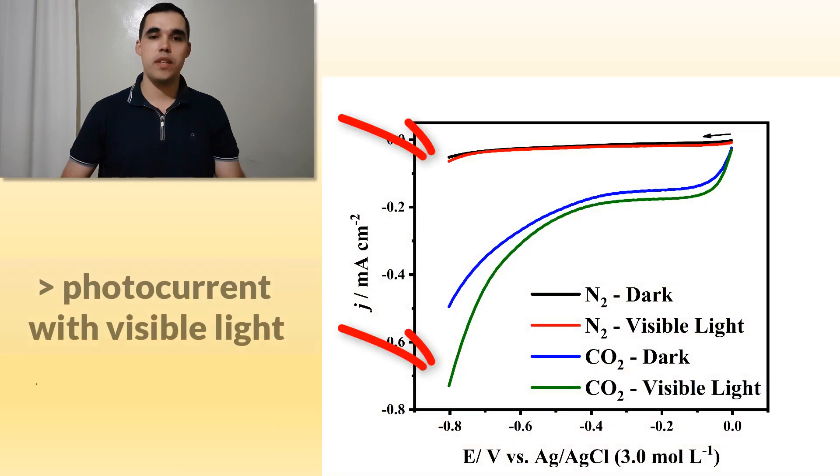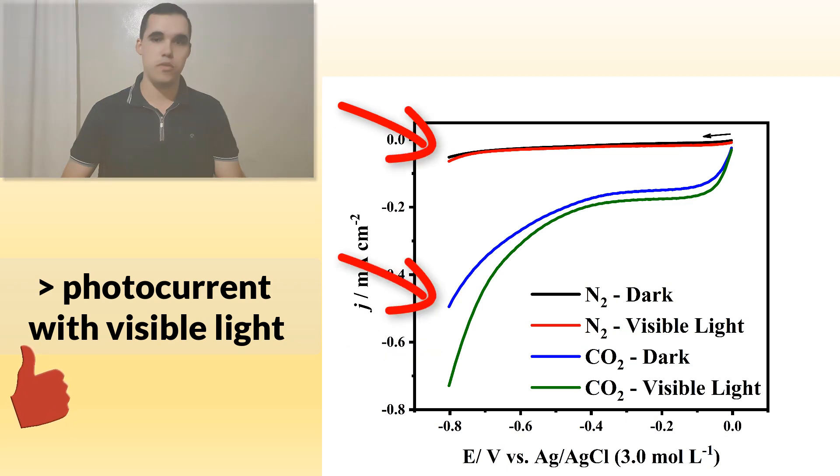The photoelectrochemical results highlight that with the samples irradiation by visible light, the photocurrent is higher when compared with dark measurements.